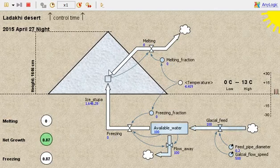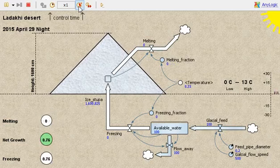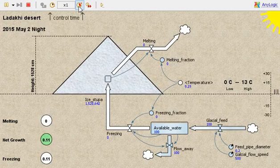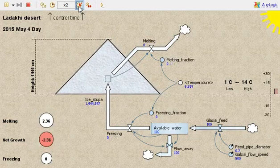With the current parameters set up, the artificial glacier lasts through the early days of June.